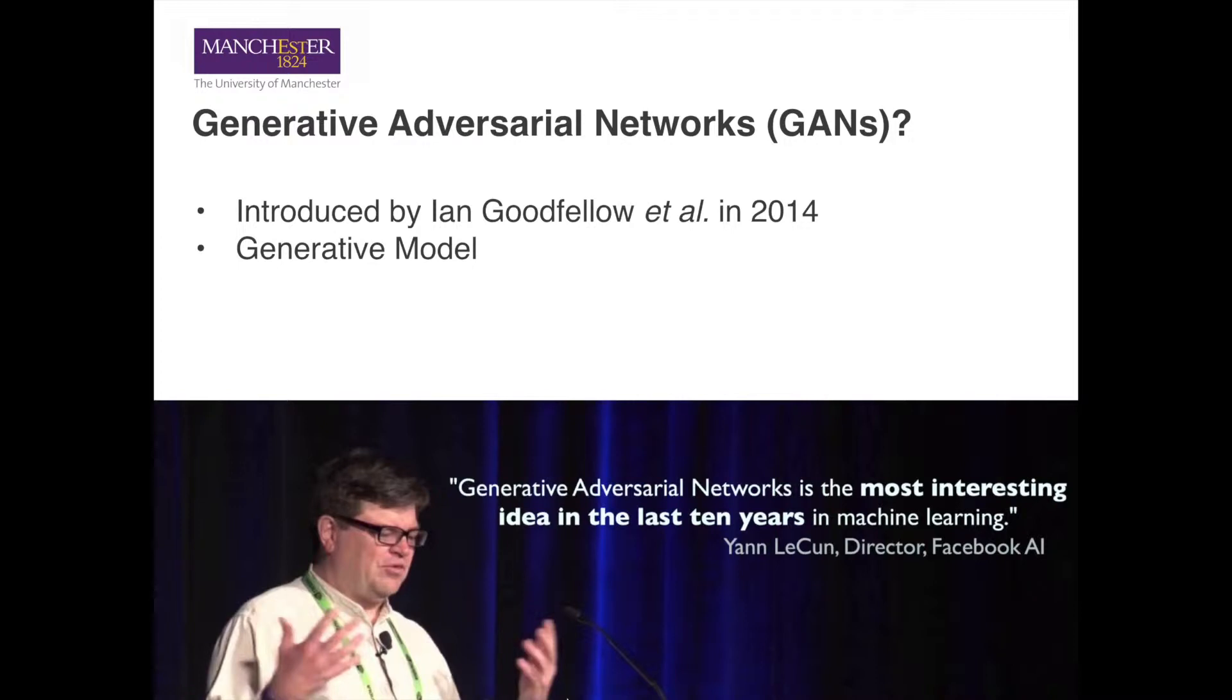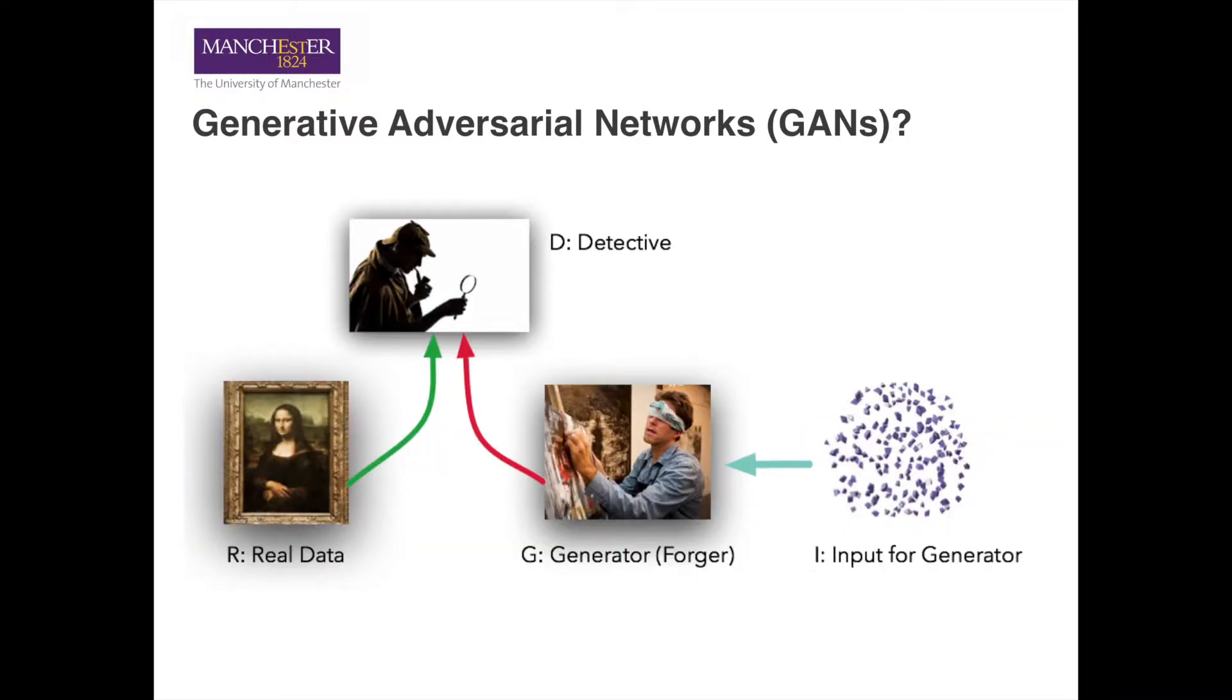The training process of GANs is what makes it unique and exciting, which is based on an adversarial framework. The model consists of two components, a generator G and a discriminator D. This diagram shows the analogy of GANs.